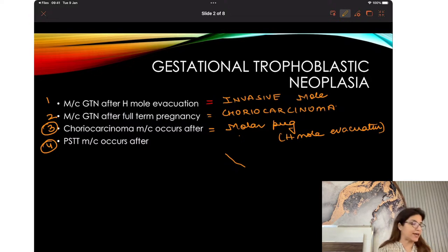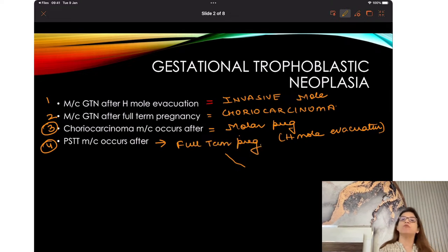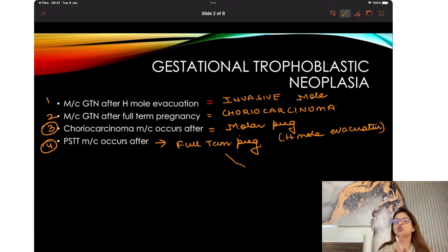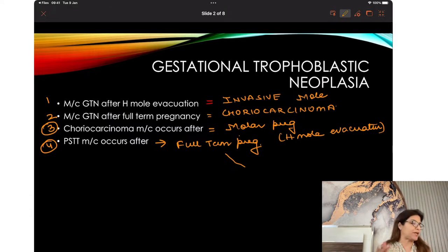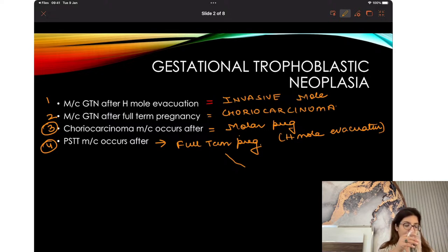Question four: PSTT most commonly occurs after full-term pregnancy. But if someone asks what is the most common GTN after full-term pregnancy, don't say it is PSTT — it is choreocarcinoma. So four different questions, four different answers, and all of them you should know.